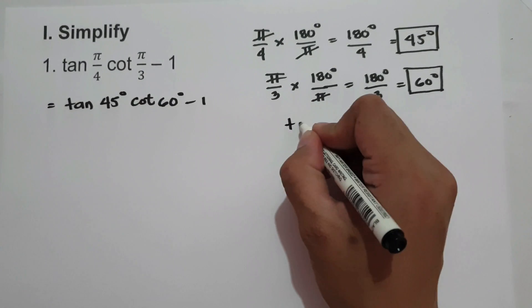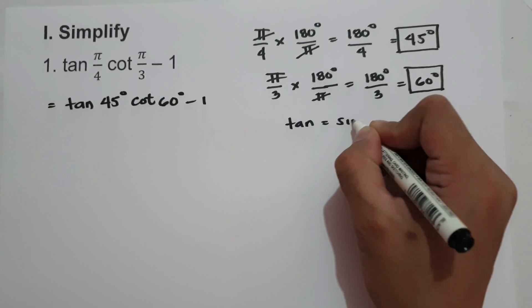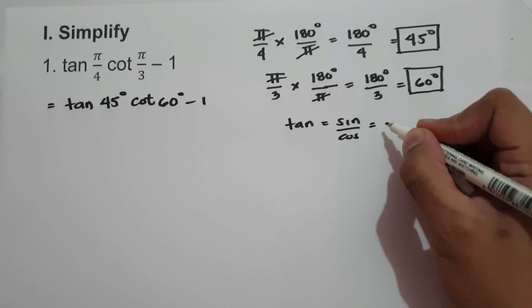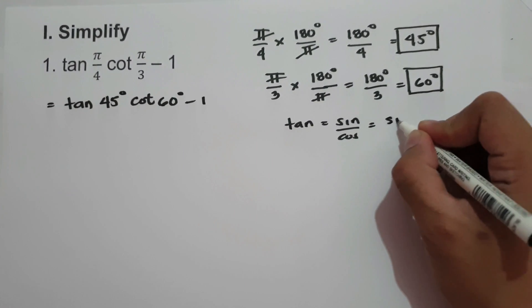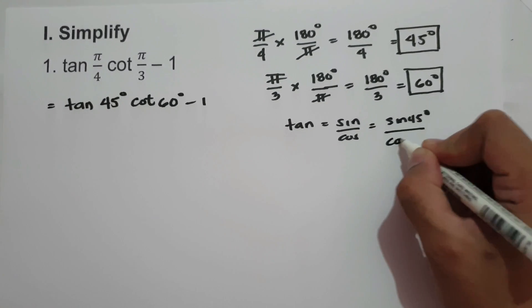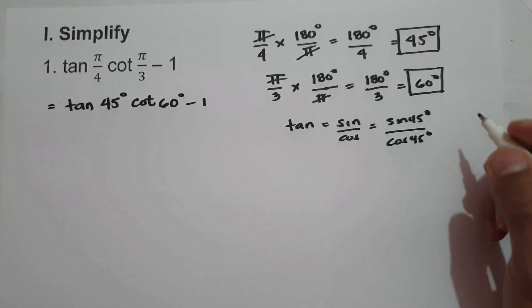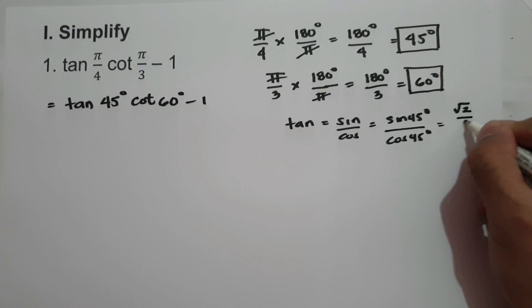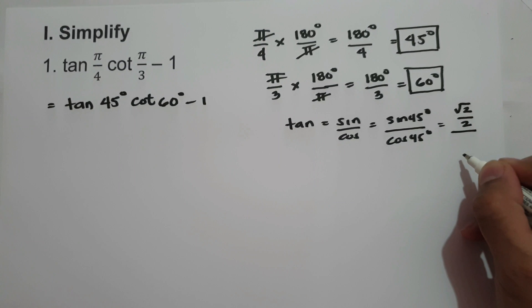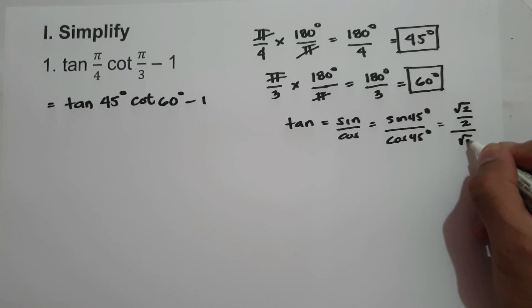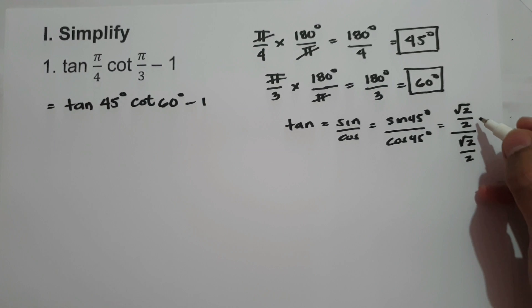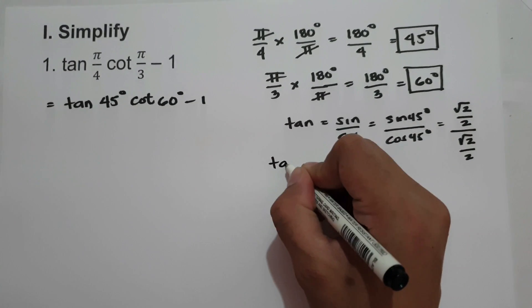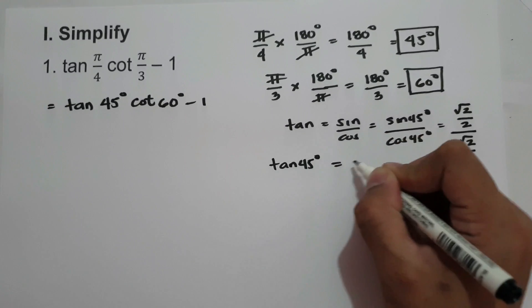The value of tangent is sine over cosine. So if we have tangent 45 degrees, we are going to have sine 45 degrees over cosine 45 degrees. Sine 45 degrees is square root of 2 over 2, and cosine 45 degrees is also square root of 2 over 2. So dividing square root of 2 over 2 by itself, tangent 45 is 1.